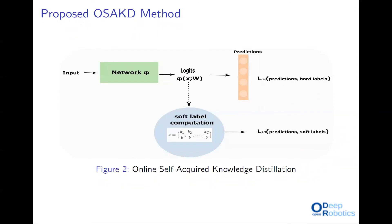The proposed training procedure is also illustrated in the figure. The input images are fed to the network, and for each sample the class predictions are produced. Subsequently, the soft labels are computed based on the network output of each sample according to the procedure described previously. Then the network is trained using the cross-entropy loss with the hard labels, and concurrently using the distillation loss — mean squared error in our experiments — enforcing the network to account for the similarity of each sample with other classes.